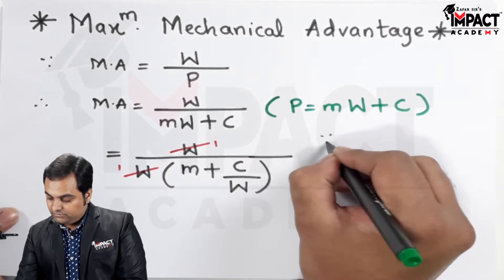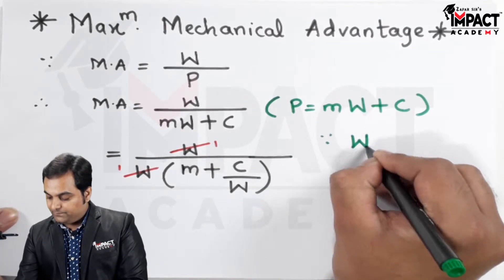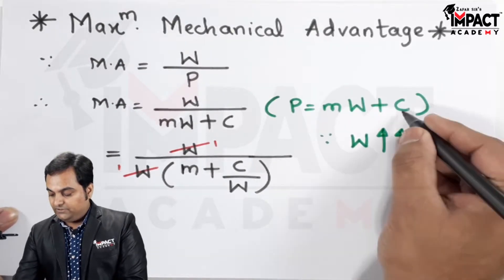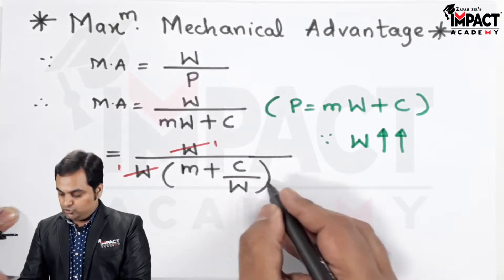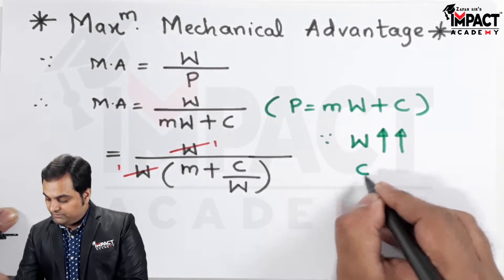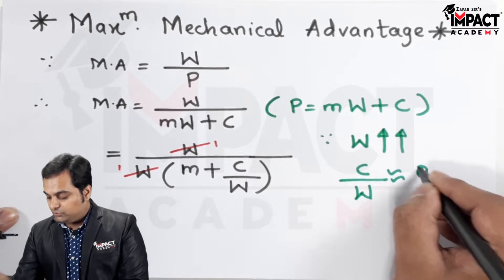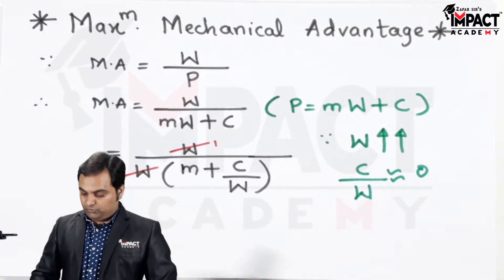And here, since the load which we are lifting is very much greater compared to this value C, the ratio C upon W is approximately equal to 0 or it is equal to 0.